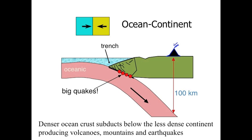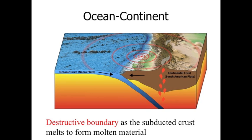The oceanic crust is much thinner, but it's also more dense. When it collides or converges with the continental crust it will subduct — meaning it goes below the other crust, down into the mantle. This creates collisions where big earthquakes occur, and it also causes the continental crust to crumble upwards, creating mountains and volcanoes with the added pressure from the magma below. So this type of convergence creates all three: volcanoes, a mountain chain, and earthquakes. This is called a destructive boundary, because the oceanic crust is removed, destroyed, and becomes molten material, which eventually rises up in the form of a volcano.